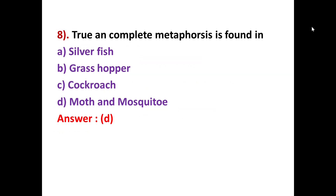MCQ number eight: true and complete metamorphosis is found in which organism? Metamorphosis involves molting — shedding of structures during developmental stages. For example, during frog development there is a tadpole stage with a tail, and during human embryonic development fingers have webbing, which is later removed through apoptosis or programmed cell death. The options are silverfish, grasshopper, cockroach, or moth and mosquito. The correct answer is D — complete and true metamorphosis is found in moth and mosquito.